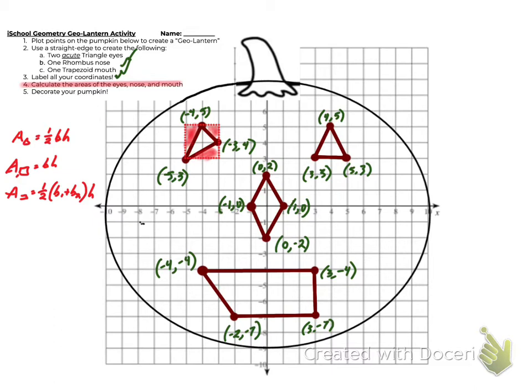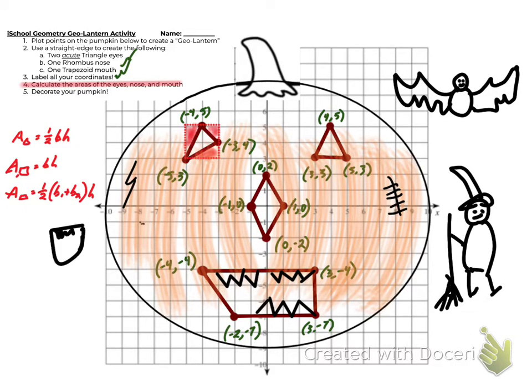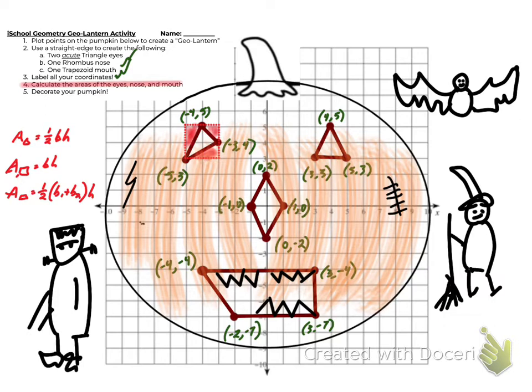Once we calculate all of the areas, the last thing we need to do is describe our shapes, what do they look like, and decorate it. So here's my spooky pumpkin, with a nice bat, and a little witch, and Frankenstein's monster. Feel free to look at my drawings and use them as inspiration. I'm gonna also show you how to use Desmos graphing calculator for this, so stay tuned for that, don't turn it off yet.